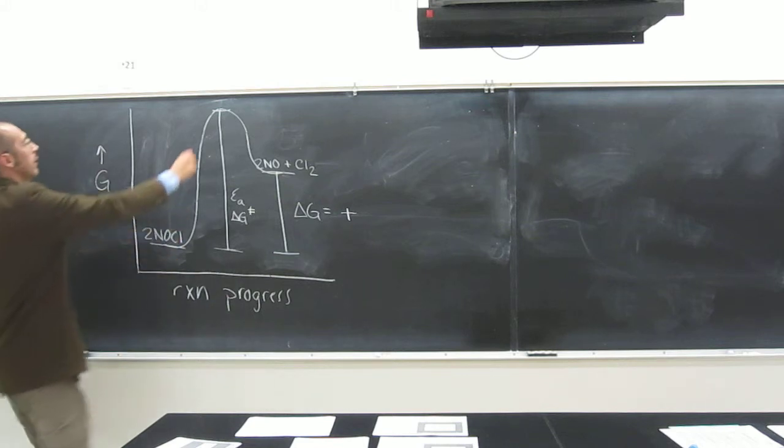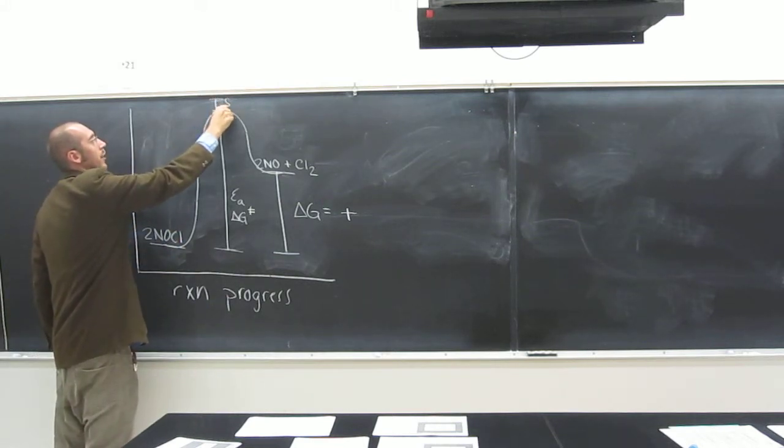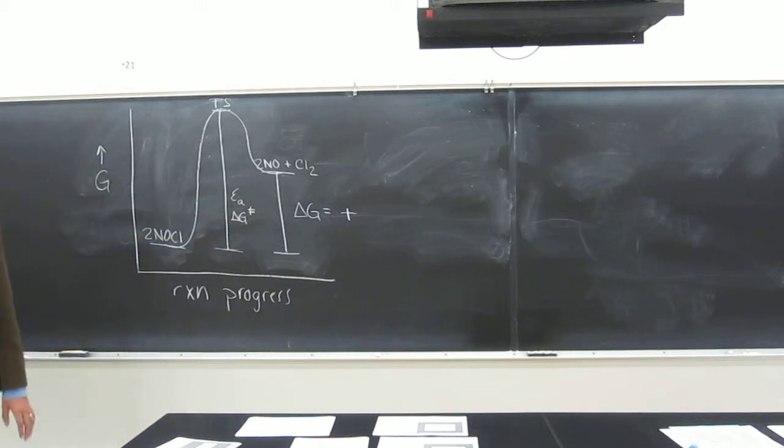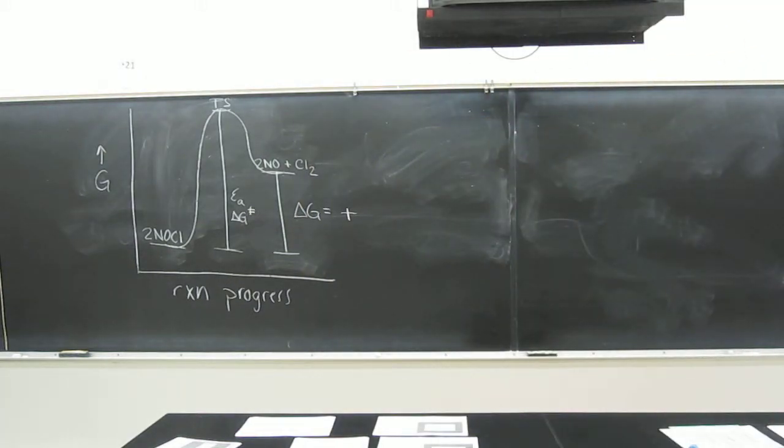And up here, at the top, what is this? The TS, or the transition state. And is that an actual molecule? No, it's nothing, right? It's something that's like a knockout blow. It's not something that you can isolate. But you can draw a picture of it, like we did last time.